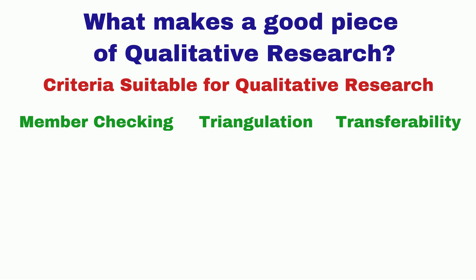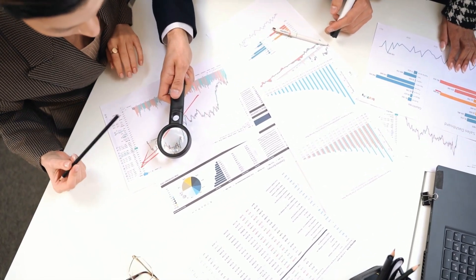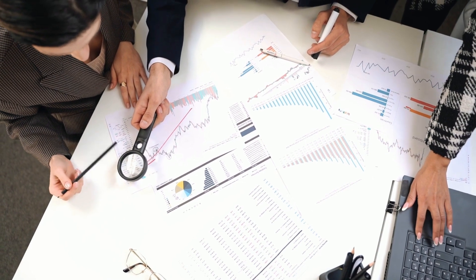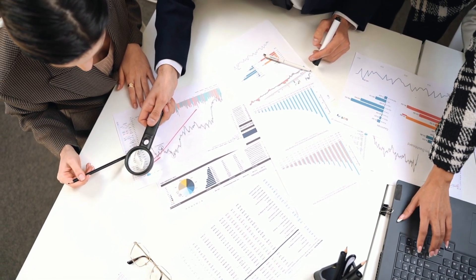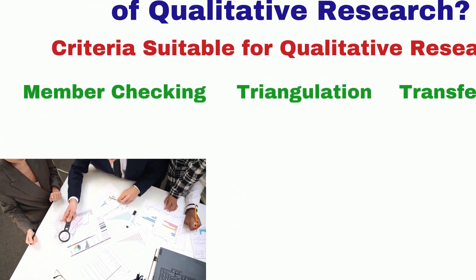Member checking refers to getting feedback from your participants or respondents. Researcher can take back the piece of analysis or written report to some or all members to check authenticity or trustworthiness of the analysis or write-up. Member checking is important to establish the credibility and quality of the analysis.